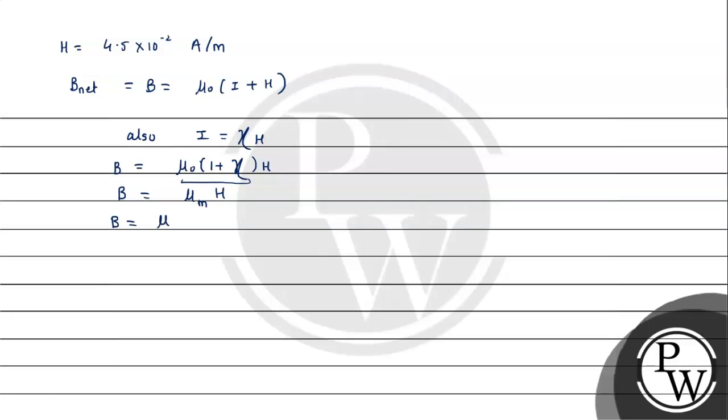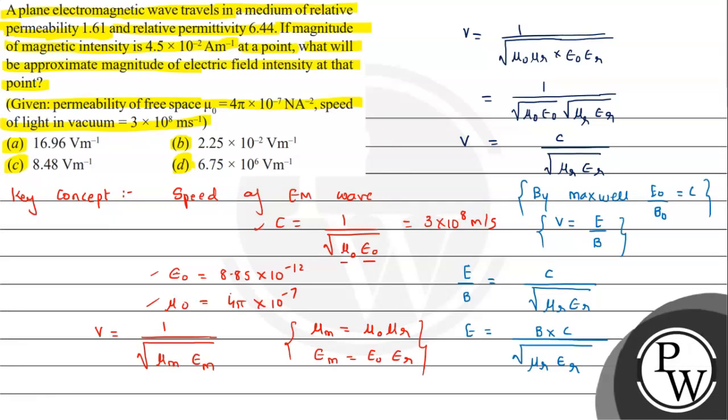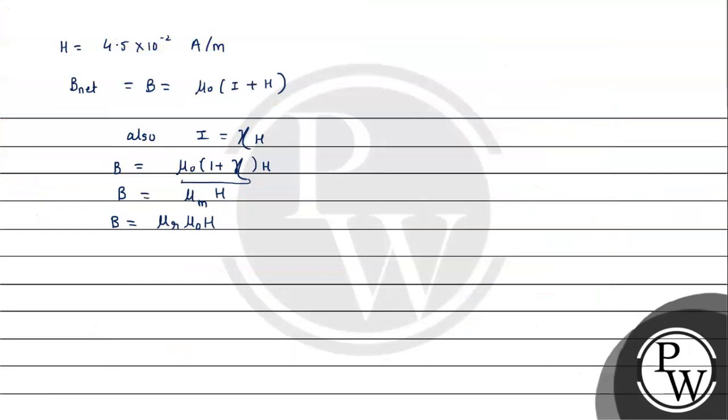If we substitute, B = 1.61 × 4π × 10⁻⁷ × 4.5 × 10⁻², we get B = 91 × 10⁻⁹ tesla.